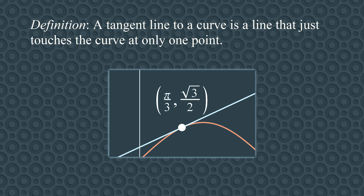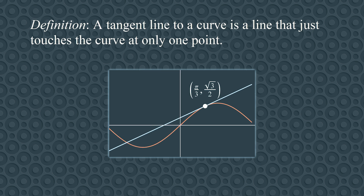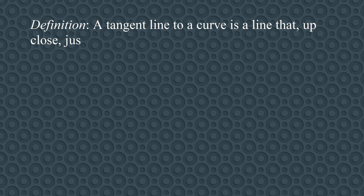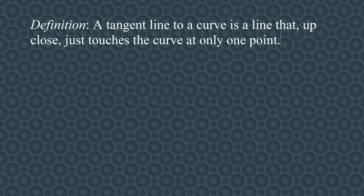Let's try again. A tangent line to a curve is a line that just touches the curve at only one point. This definition is better — it captures the idea that a tangent line gradually approaches the curve and touches it at a single point — but it's also wrong. Look again at the sine curve example. Up close, the line does just touch the curve at one point without crossing it, but if you zoom out, you will see the line crosses the curve at a second point farther away. So a better definition might be: a tangent line is a line that, up close, just touches the curve at only one point. This is a pretty solid definition, but the phrases 'just touches' and 'up close' are both kind of vague.